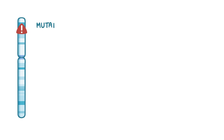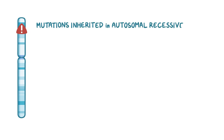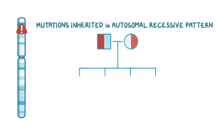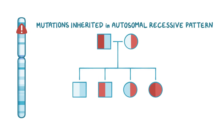Mutations in the ASPA gene are inherited in an autosomal recessive pattern, meaning an individual must inherit two copies of the mutated gene, one from each parent, to develop the condition.